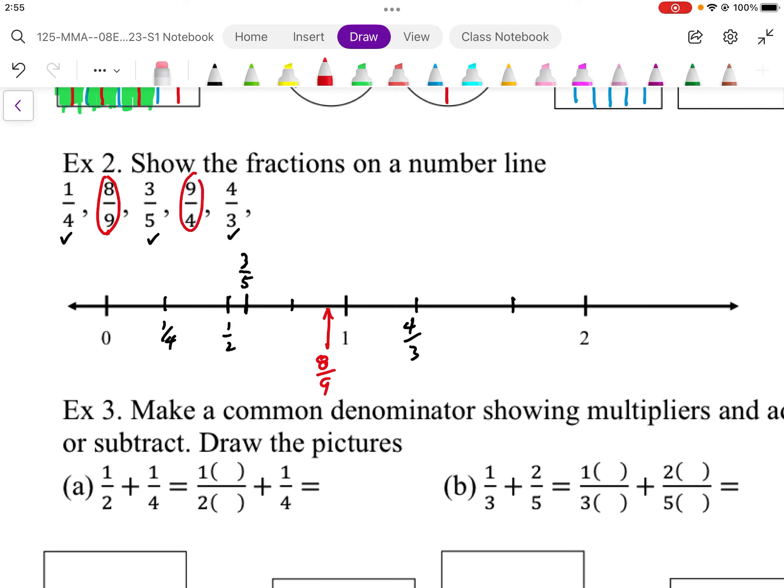And then lastly, 9 over 4. If I divide 9 divided by 4, I get 2.25. So I know that's going to be somewhere around here, which is 2 and 1 quarter. So that looks like about the same as the 1 quarter I have here.